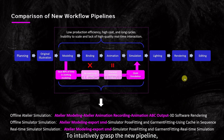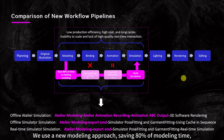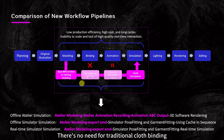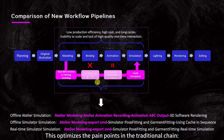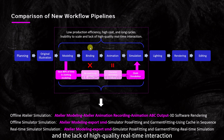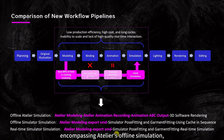Comparing the new pipeline with the traditional pipeline: in the new modeling approach, it saves 80% of modeling time and makes assets more easily reusable and modifiable. There's no need for traditional cloth binding — cloth simulation is directly driven by character animations. This optimizes pain points in the traditional chain: low efficiency, high costs, lengthy cycles, inability to scale, and lack of high-quality real-time interaction. Atelier's roles in the new workflow encompass offline simulation and simulator's offline and real-time simulation.